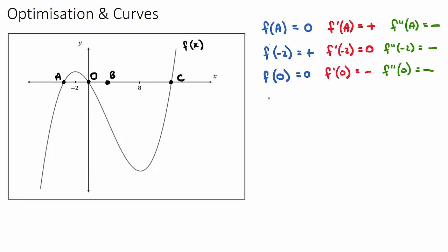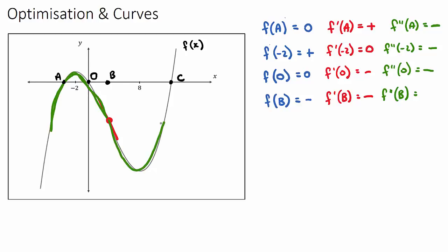Three more points. f(b): when x is at point b, the y-value will be negative. f'(b): at point b the slope is going down, so we'll have a negative slope. The double derivative is an interesting one — it relates to concavity. Is it part of the negative concavity or the positive concavity? It looks to be right in the middle. If we have no concavity, it's a point of inflection — and that's when the double derivative is equal to 0.